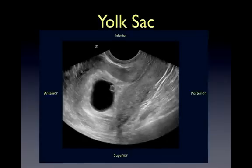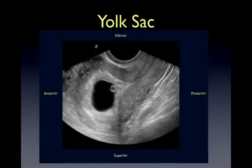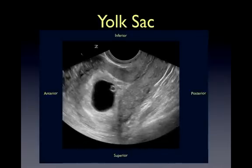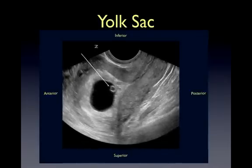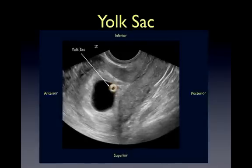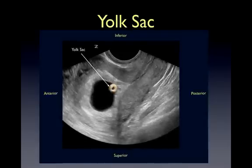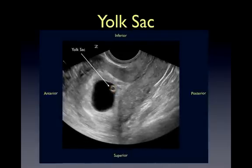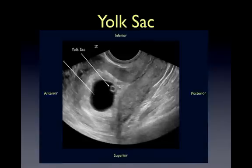By week 5-6 of gestation, a yolk sac should be visualized. It is the first element seen in the gestational sac during pregnancy and looks like a small cheerio.